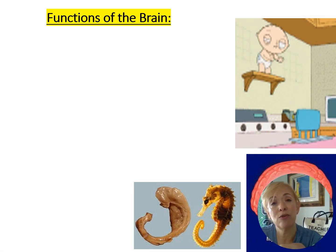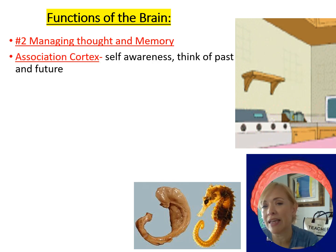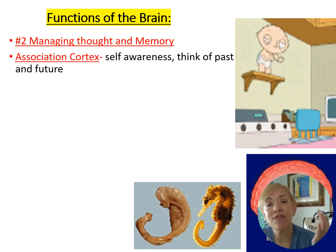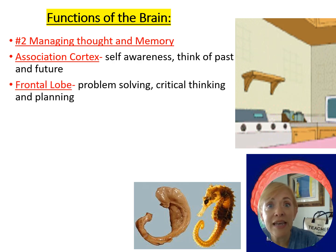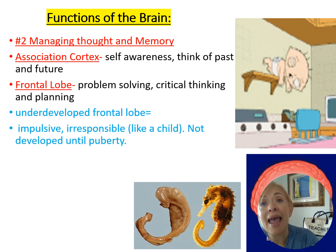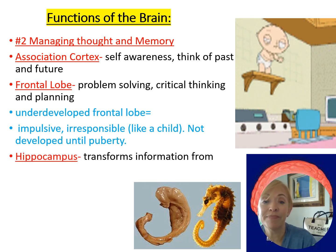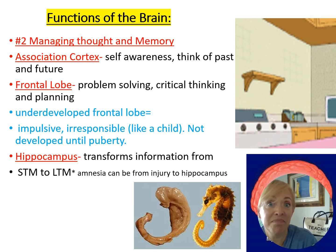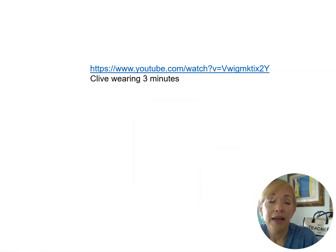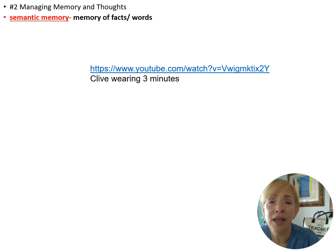The frontal lobe handles critical thinking, planning, and executive functioning. The hippocampus is essential for memory — mnemonic: 'if you see a hippo on campus, you'll remember.' Without the hippocampus, you can't transfer short-term memories into long-term memories. The word hippocampus is Greek for seahorse, and it actually looks like one. Clive Wearing, a famous amnesiac, had such a damaged hippocampus that he could only hold seconds of information in short-term memory.